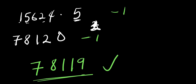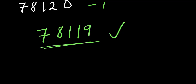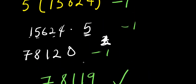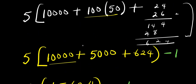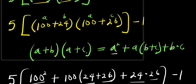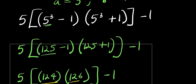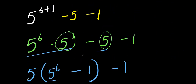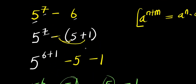So this becomes the final answer: 5 power 7 minus 6 equals 78,119. This is how you can actually solve this or evaluate this without the use of a calculator, step by step. I believe you enjoyed this video — don't forget to subscribe and share this video with your friends.